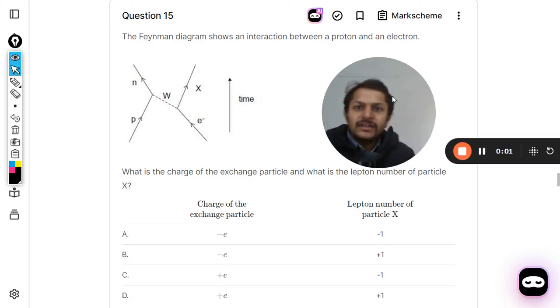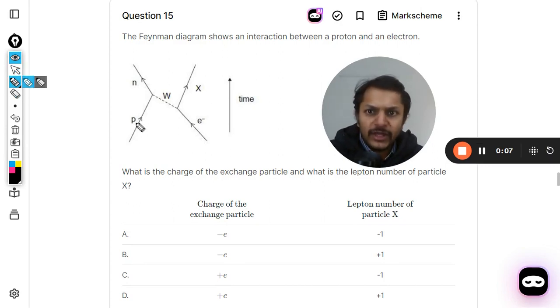In this question, the Feynman diagram shows an interaction between a proton and an electron. This is a neutron here, and the time axis—step number one when you're going to read the Feynman diagram is that you have to first locate where is the time, what is the direction of the time. So the direction of the time is in the upward direction.